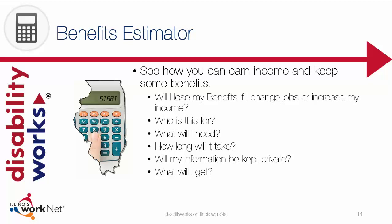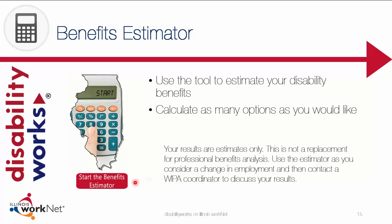The estimator takes less than 10 minutes to complete, and all of the information remains confidential. The estimator considers your current income and benefits and provides for an additional income change or a job replacement. A benefits summary identifies potential benefits and options to explore. When you are ready to start, you can select the red button labeled Start the Benefits Estimator. Use the estimator to calculate a number of work-related variations. Your results are estimates only — this is not a replacement for professional benefits analysis. Use the estimator as you consider a change in employment and then contact a WIPA coordinator to discuss your results. WIPA stands for Work Incentive Planning Assistance.